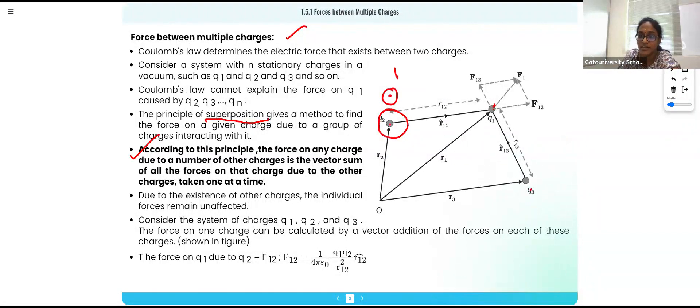So I can write F21. Because of Q3 also there will be some force on Q2 right. So I can write F21—sorry, F23 right, force on second one due to third one.